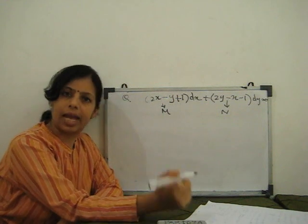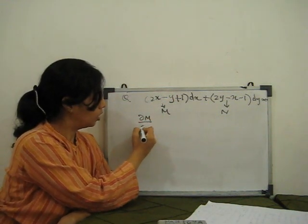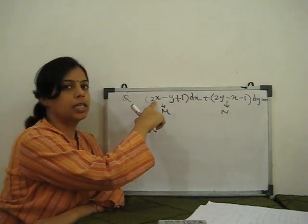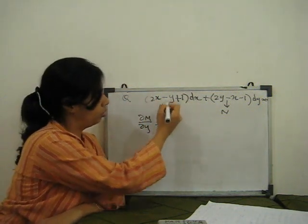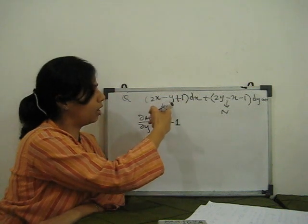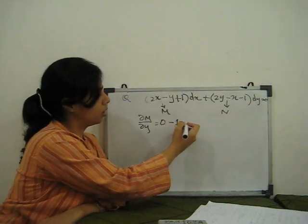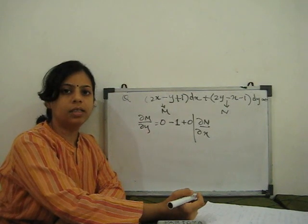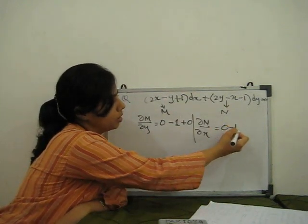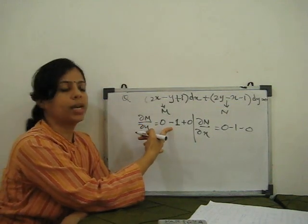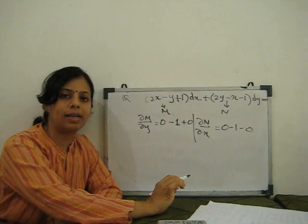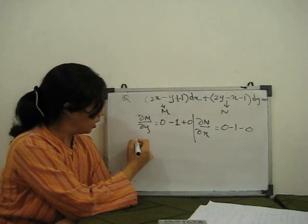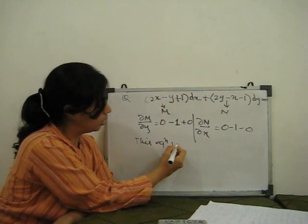The first step is to check exactness. We find del M upon del y: differentiating M partially with respect to y, treating x as constant. The 2x term and constant term become 0, so del M upon del y equals minus 1. For del N upon del x, treating y as constant: 2y term becomes 0, giving minus 1 minus 0 equals minus 1. Since del M upon del y equals del N upon del x, both equal minus 1, the condition of exactness is satisfied. Hence this equation is exact.